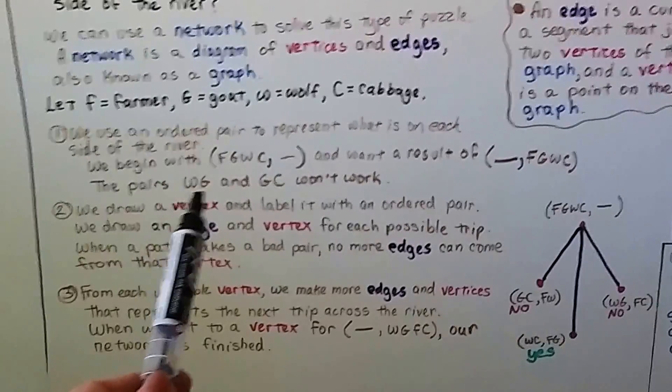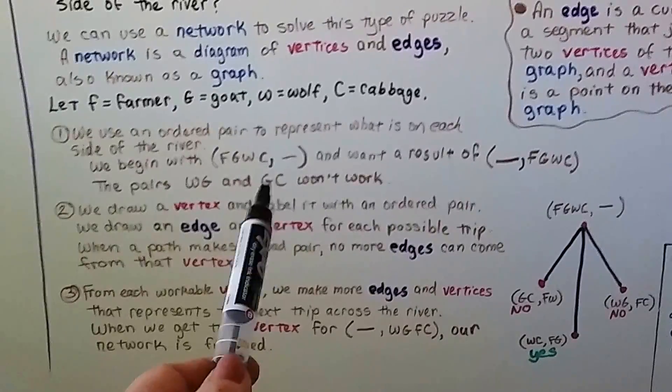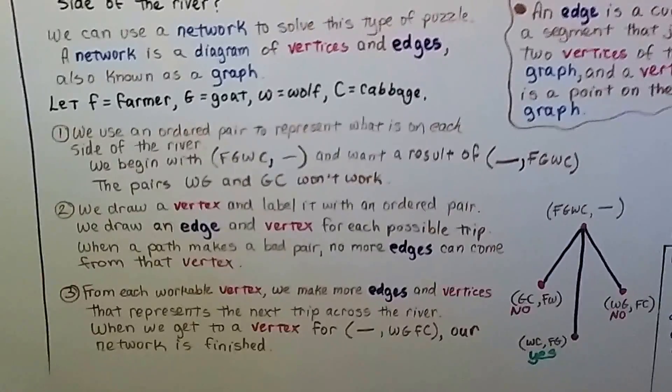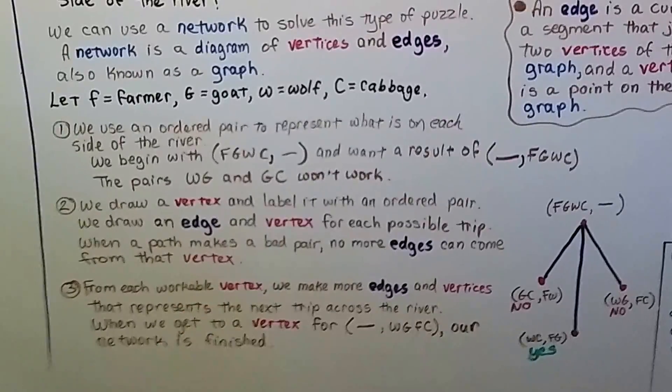And the pairs W, G, wolf and goat, and the pairs G, C, goat and cabbage, won't work because the wolf will eat the goat and the goat will eat the cabbage.